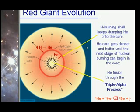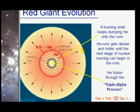The hydrogen burning shell keeps dumping helium onto the core. The helium core gets denser and hotter until the next stage of nuclear burning can begin in the core — helium fusion — at which point we get more heavier elements produced.